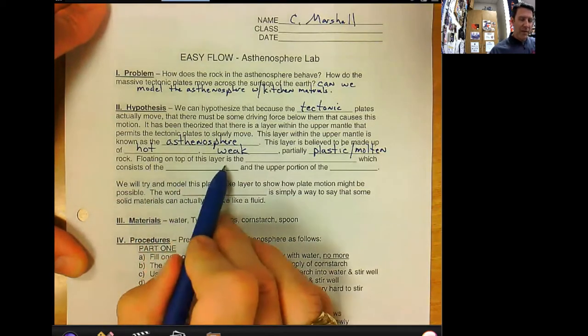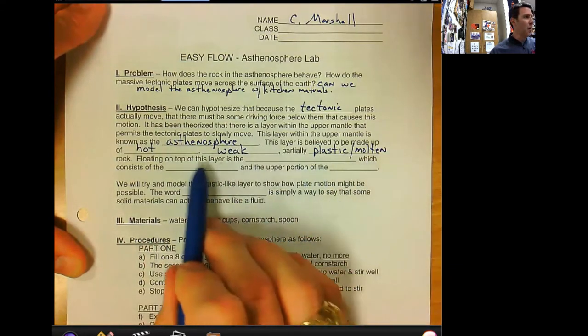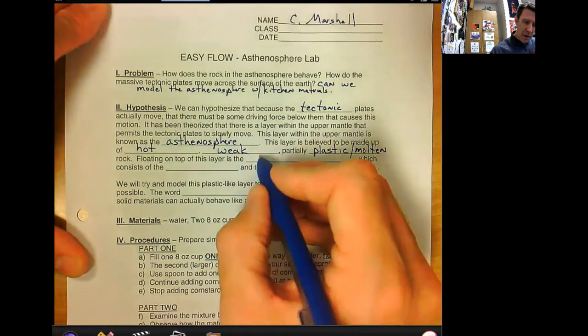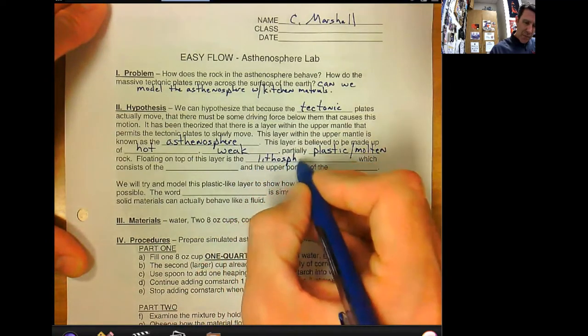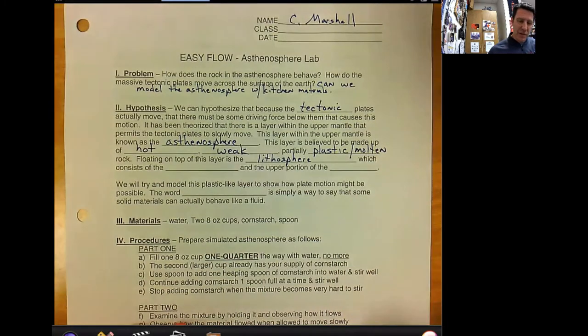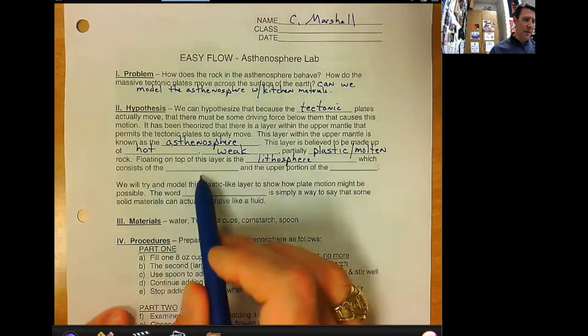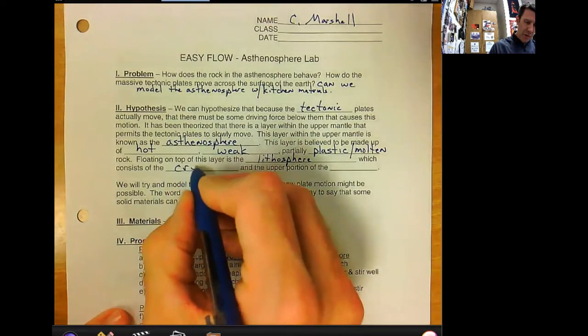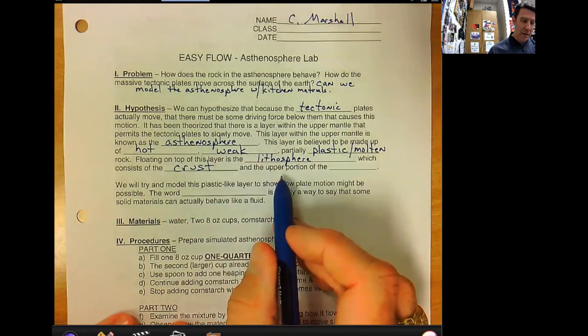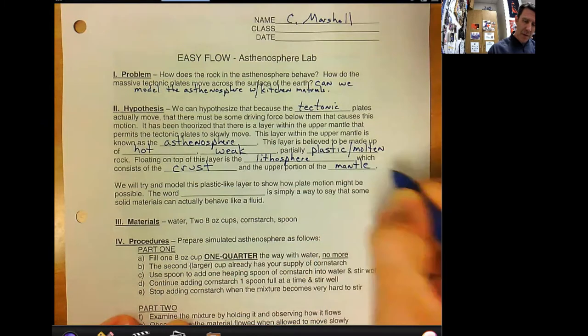Floating on top of this layer, the asthenosphere, which is hot, weak, and plastic-like with some molten properties, floating on top of this is the, starts with an L, the lithosphere. This actually is the plates. The lithosphere consists of the crust, it's not the same as the crust, and the lithosphere also includes the upper portion of the mantle.